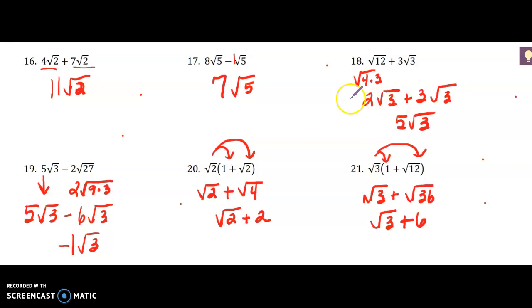For number 19, notice I can't simplify that first term, but I can simplify the square root of 27. I broke that down into 9 times 3. The square root of 9 is 3, times 2 is 6. So I have 5 square roots of 3 take away 6 square roots of 3, which is negative 1 square root of 3.